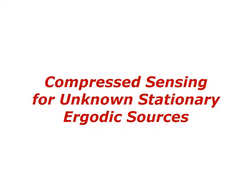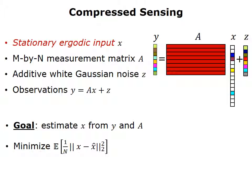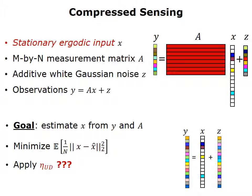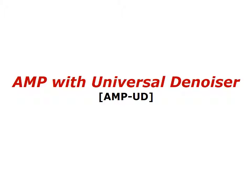We'd like to use our universal denoiser to solve linear inverse problems or compressed sensing problems for stationary ergodic inputs whose distributions are unknown. Let's consider a compressed sensing setting: we have an input signal x which is stationary ergodic and a vector of length n. We measure that signal by multiplying it by a matrix A, which has m rows and n columns, and we add white Gaussian noise z, a vector of length m, resulting in noisy measurements y. The goal is to estimate the original input x from y and the matrix A, while minimizing the mean square error between x and x-hat. This connection is provided by the approximate message passing, or AMP, framework, which converts the complicated linear inverse problem into much simpler denoising problems.